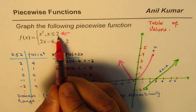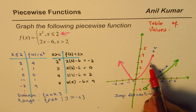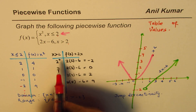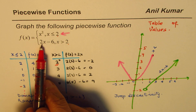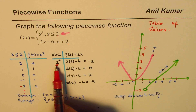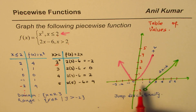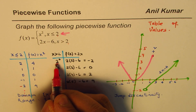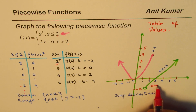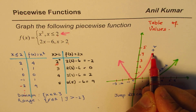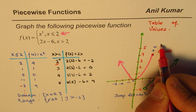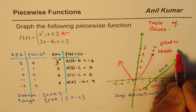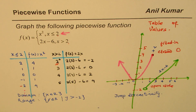In this video, we learned that to graph a piecewise function, it is good to have a table of values — they help. It is very important to analyze the point where the graph switches from one piece to another, and to check whether the starting point is an open circle (not included) or a closed, filled-in circle (included). I'm Anil Kumar, and I hope this is clear. If you have questions, please feel free to post them. Thank you, and all the best.